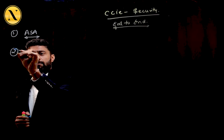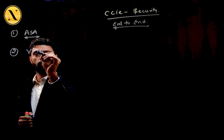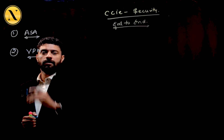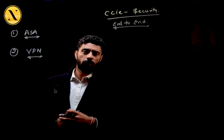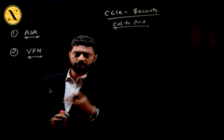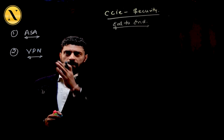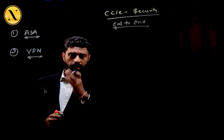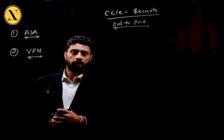The second module we're going to cover is VPN. All the Layer 3 VPNs will be covered here, again from scratch. We'll talk about cryptography, encryption, and hashing — all will be covered under this section.